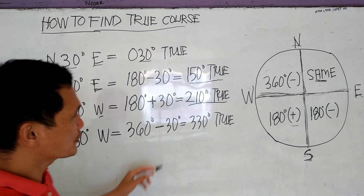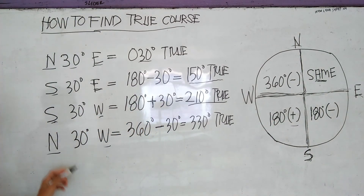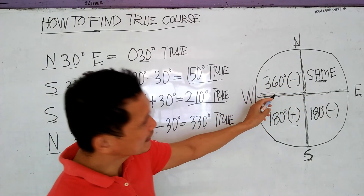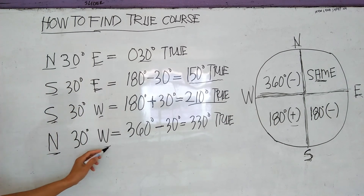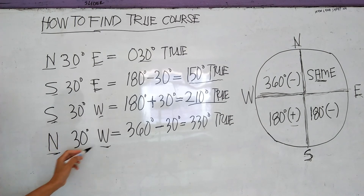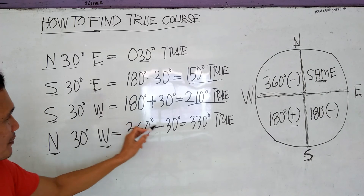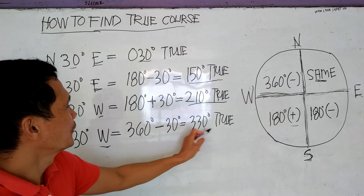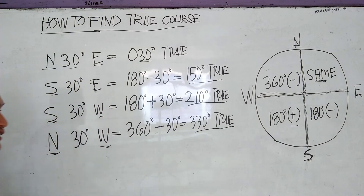Now, let's proceed to another example: North-West. North-West uses the formula 360 degrees minus the course angle. So, 360 minus 30 degrees — therefore, the true force is 330 degrees true.